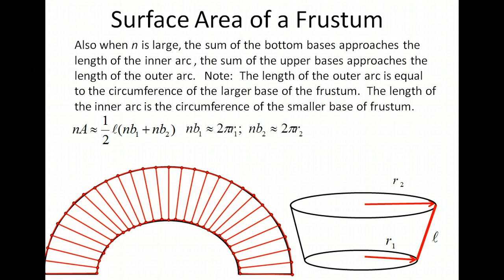So we have nb1 is 2πr1 and nb2 is 2πr2. Substituting that into our formula, we have one half the slant height times 2πr1 plus 2πr2.